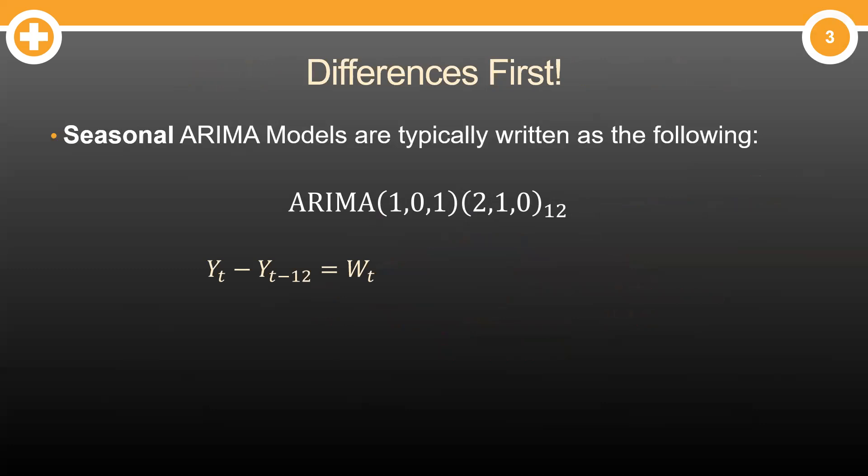First, always start with your differences. We have a seasonal difference. How big? 12. So that means we have a seasonal wave through our data that is 12 time periods long. To get rid of that, we take a seasonal difference of 12.